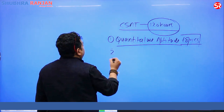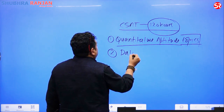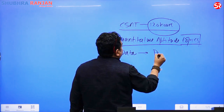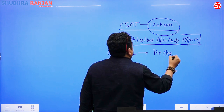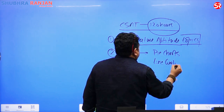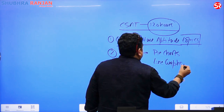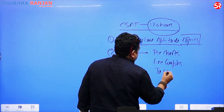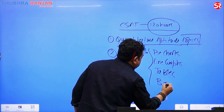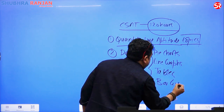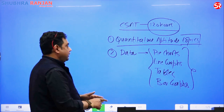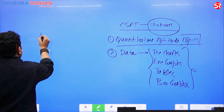Secondly, we are covering all types of data interpretation. When we talk about data interpretation, we talk about pie charts, line graphs, data tables, and bar graphs — all four types of data would actually be covered.